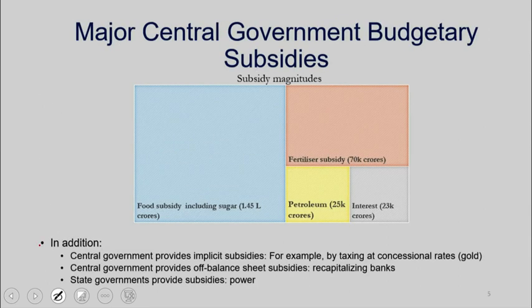Let's see what happens in India today. This is one way of presenting what the major central government budgetary subsidies are. Today the biggest subsidy is the food subsidy. The second biggest subsidy is fertilizer, and then the others. But remember, these are major central government budgetary subsidies. In addition, you could have government's implicit subsidies, for example by giving taxes at concessional rates.